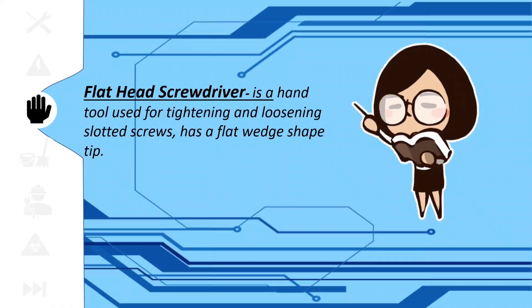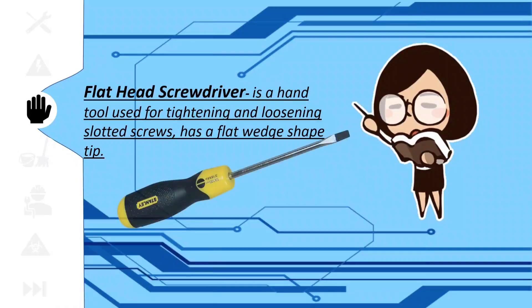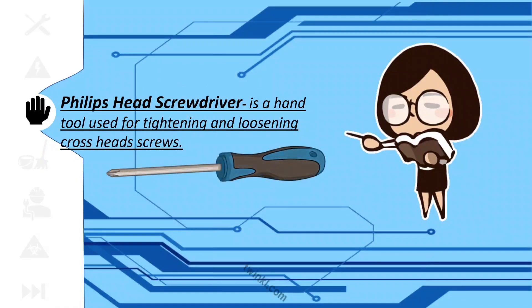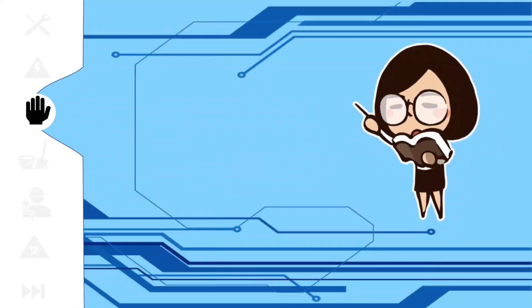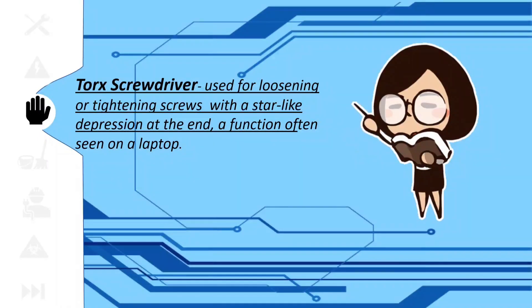Flat head screwdriver is a hand tool used for tightening and loosening slotted screws, and has a flat wedge-shaped tip. Phillips head screwdriver is a hand tool for tightening and loosening cross-head screws. Torx screwdriver is used for loosening and tightening screws with a star-like depression at the end, a function often seen on a laptop.